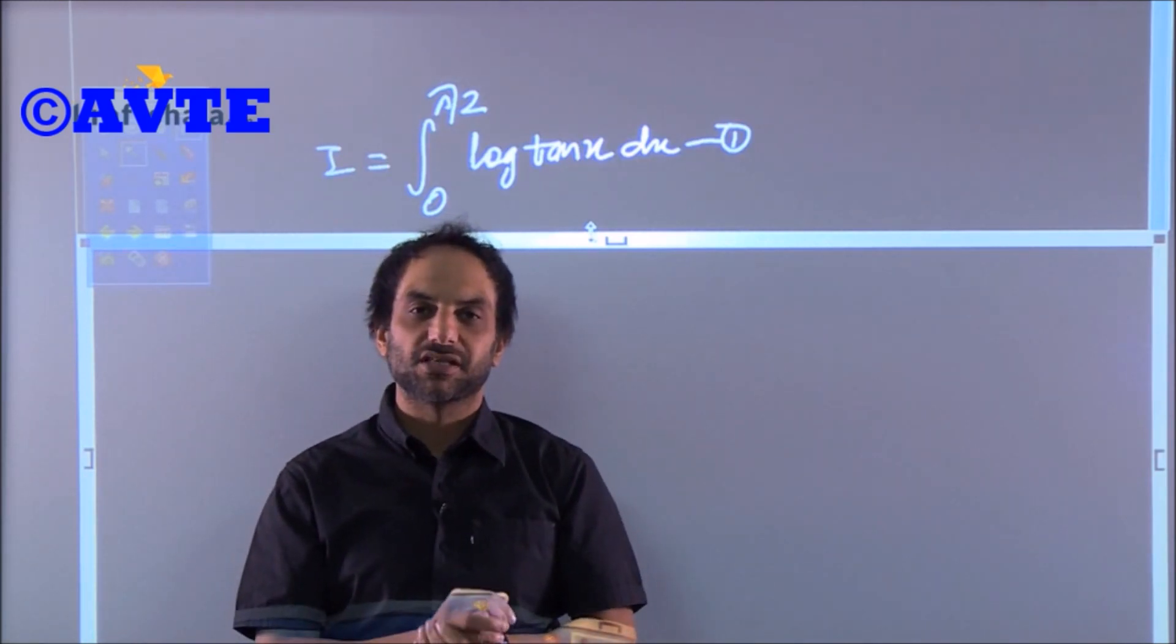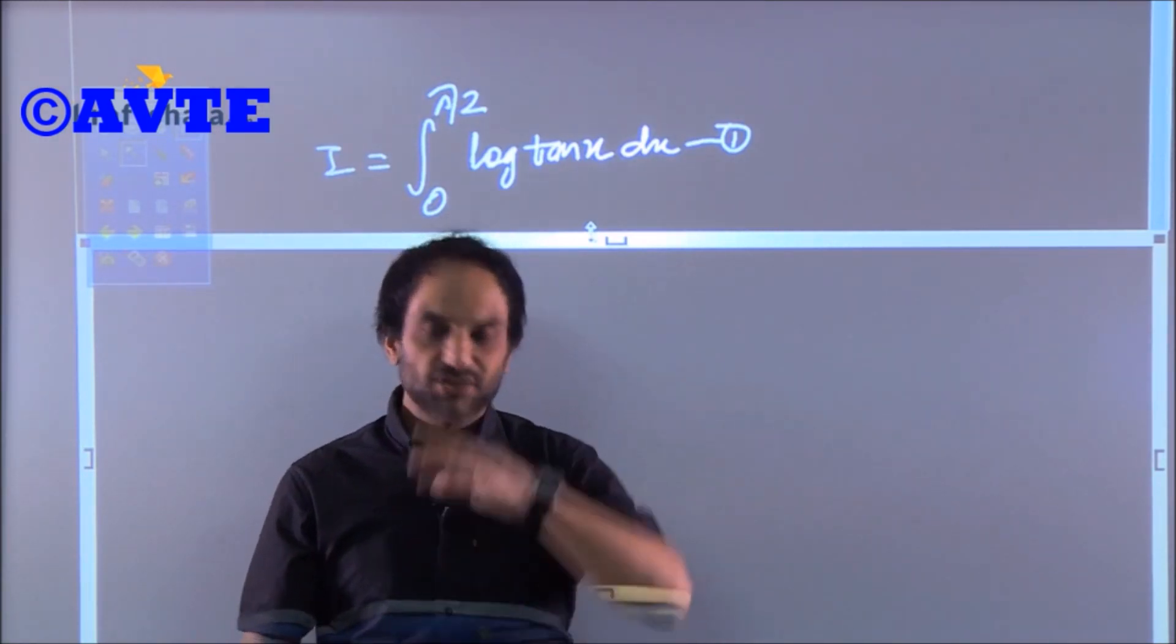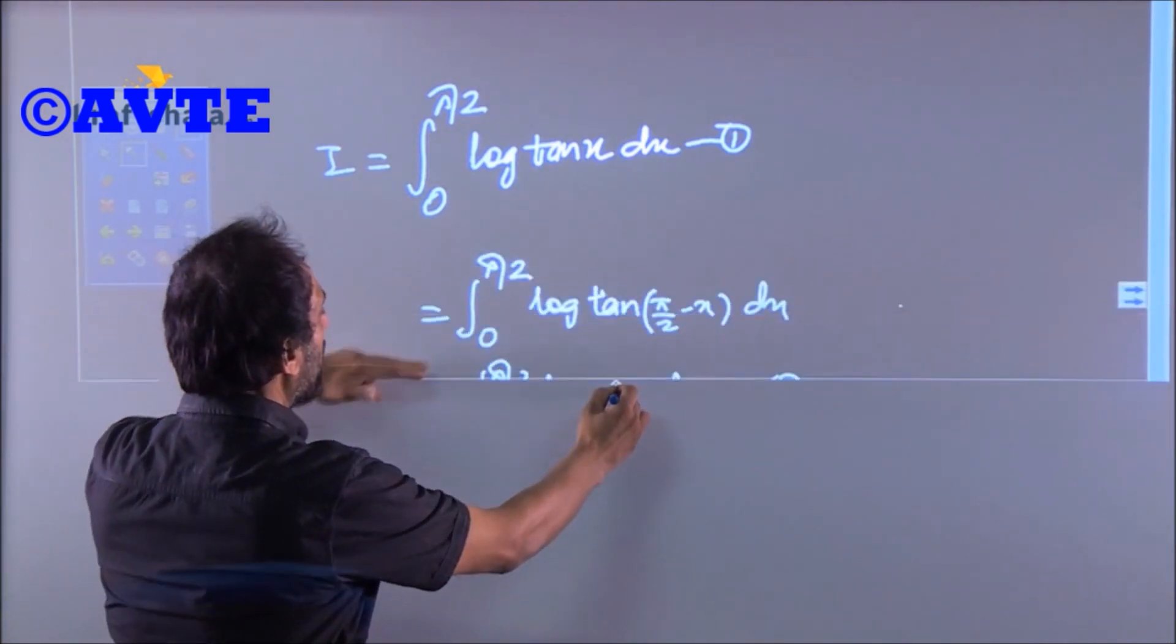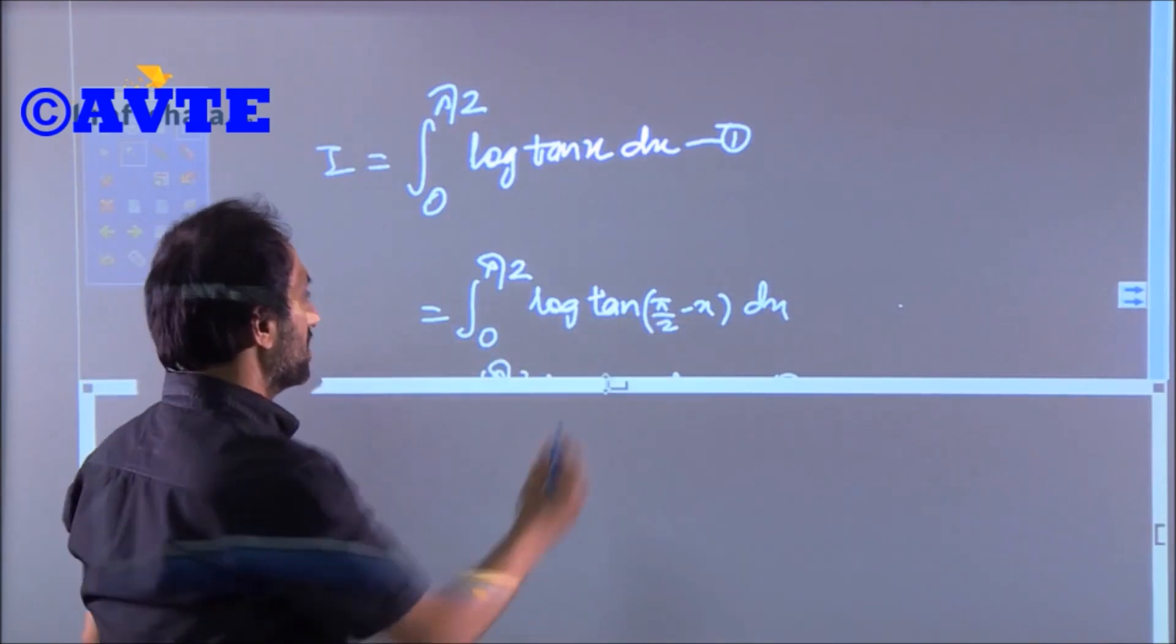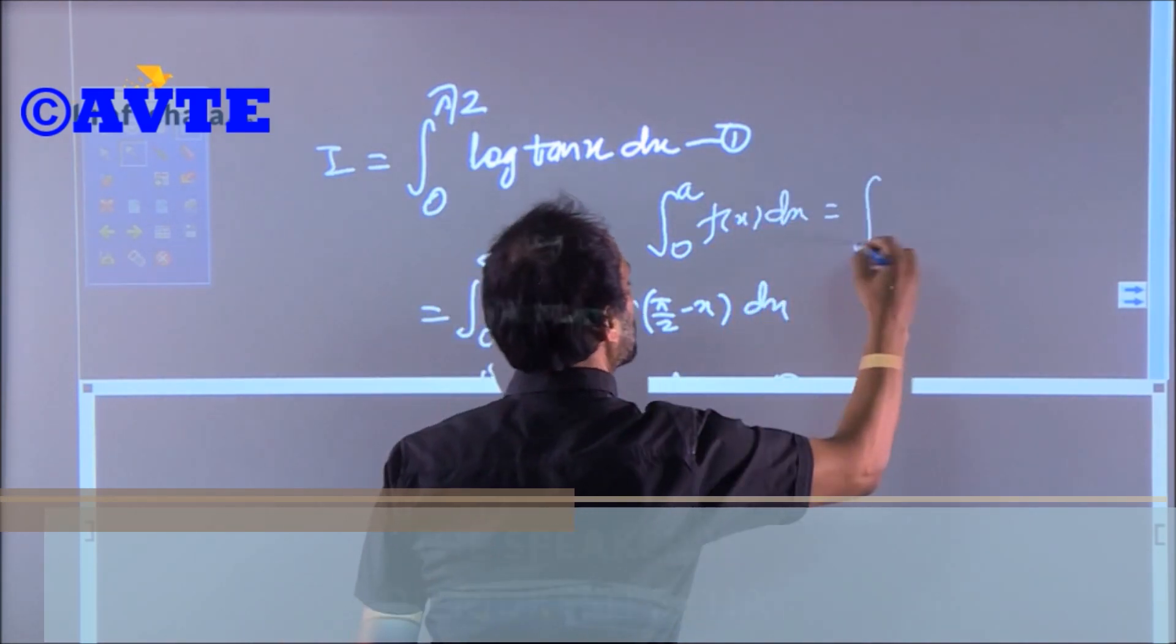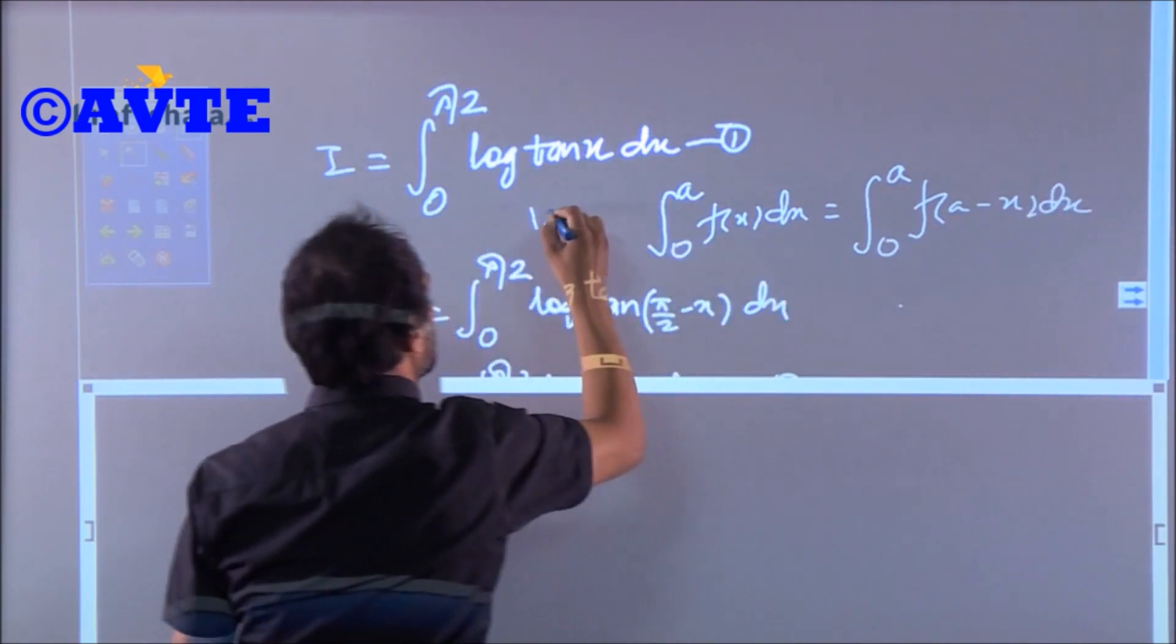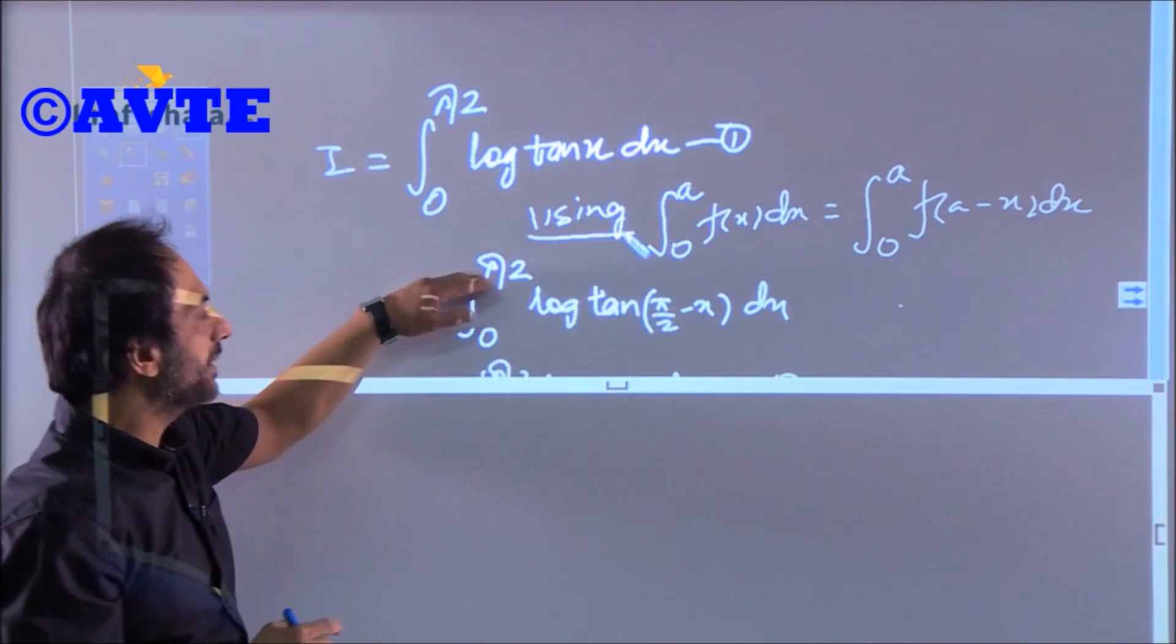So let's try. I'm applying I = ∫₀ᵃ log tan(90-x)dx, using the a-x substitution as I said. It is better to write 'using this property' for CBSE, so we are using this property. Now when we apply this to ∫₀^(π/2)...